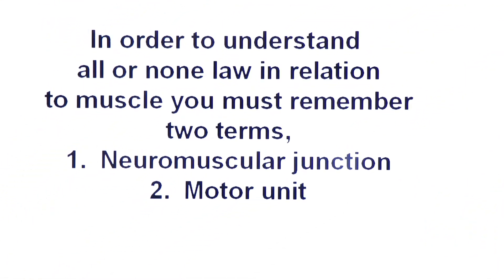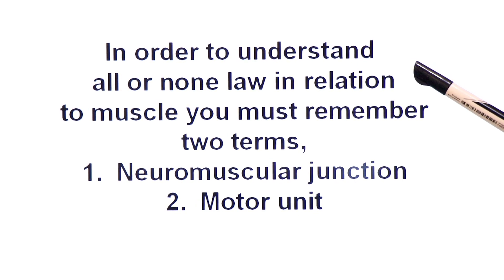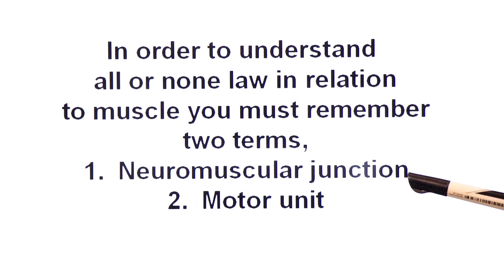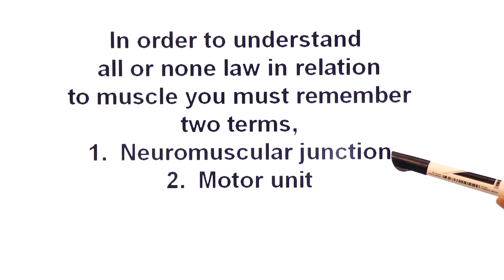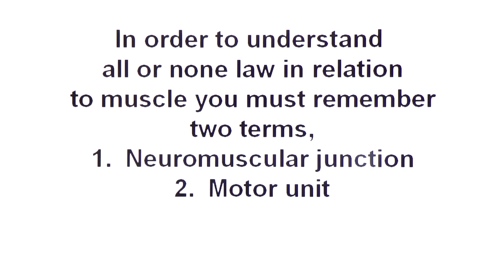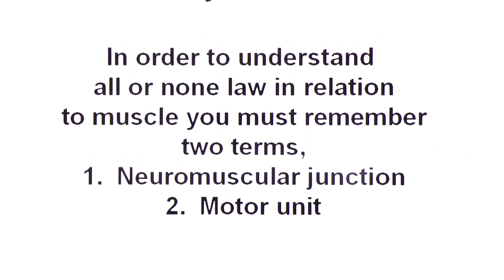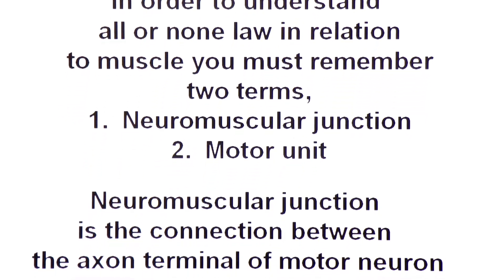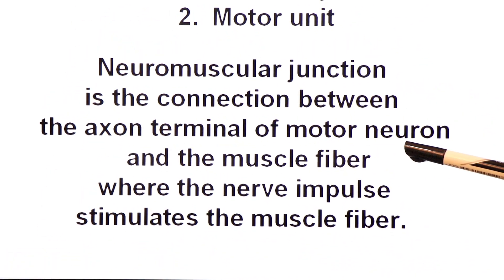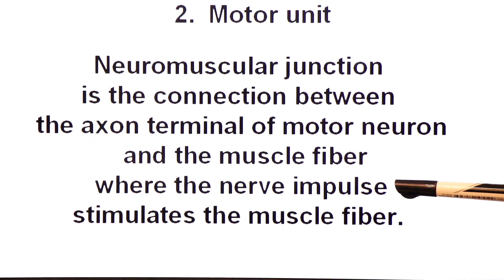In order to understand the All or None Law in relation to muscle, you must remember two terms: number one, neuromuscular junction, and number two, motor unit. So let's first define what is neuromuscular junction. Neuromuscular junction is the connection between the axon terminal of a motor neuron and the muscle fiber where the nerve impulse stimulates the muscle fibers.